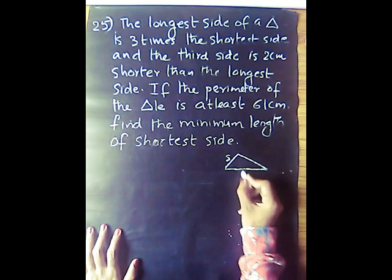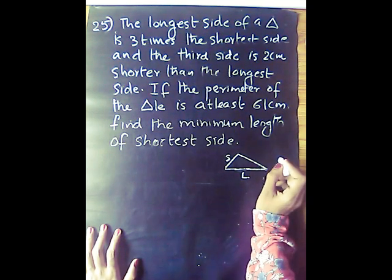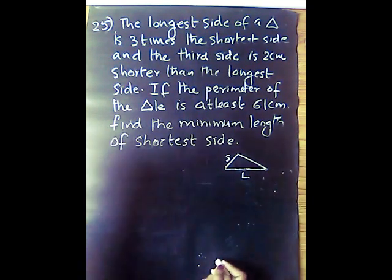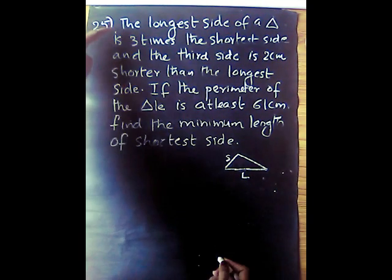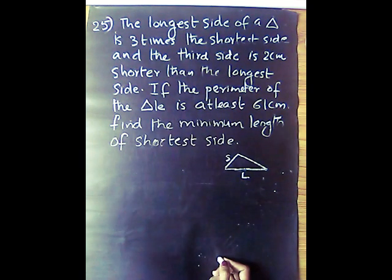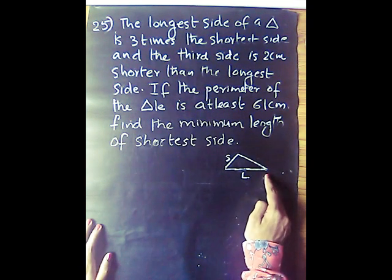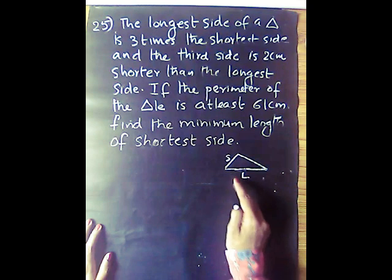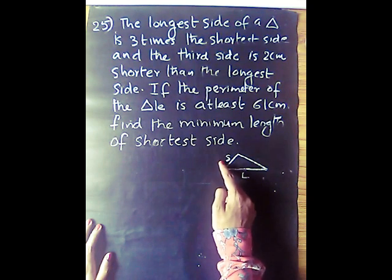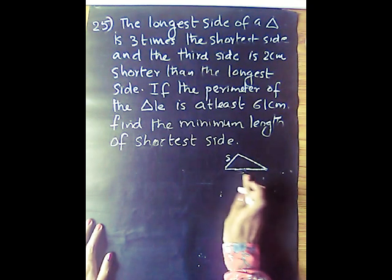The longest side of a triangle is 3 times the shortest side. Let the shortest side be s, so the longest side is 3s.